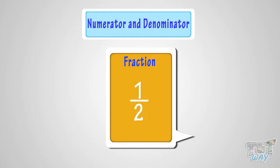The numeral written above the line is called numerator, and the numeral written below the line is called denominator.